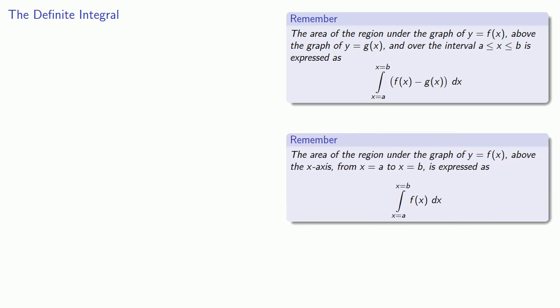Now there's one useful variation on this. If I want to find the area of the region under the graph of y equals f above the x-axis, from x equals a to x equals b, then my second curve is y equals 0, and so this f minus g just becomes f, and my definite integral looks like this.